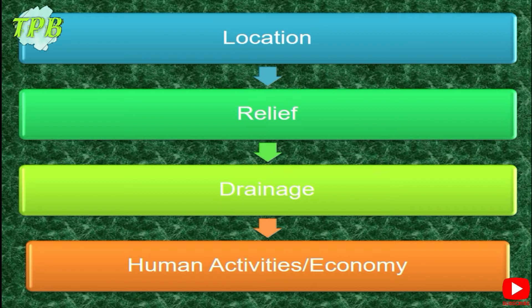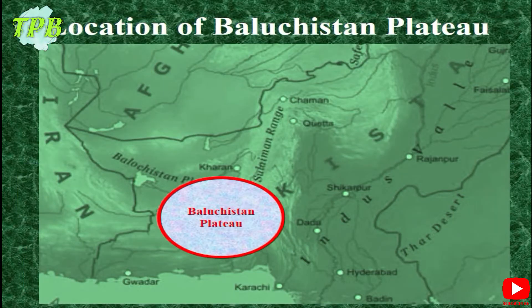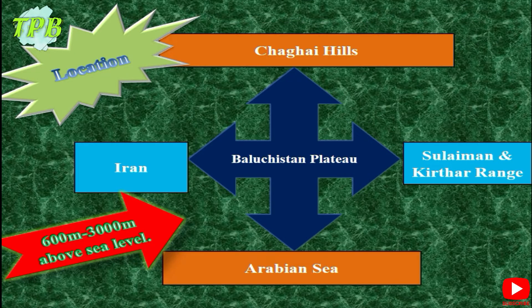Today we will cover the location, relief, drainage, and human activities of the Balochistan Plateau. As you can see in this map, the Balochistan Plateau is located towards the south and southwest of Balochistan. It is a really large area marked with several types of relief and drainage features. Its boundaries include the Jhob Hills towards the northwest, the Sulaiman and Kirthar Range in the east, the international border of Pakistan and Iran on the west, and the Arabian Sea towards the south.